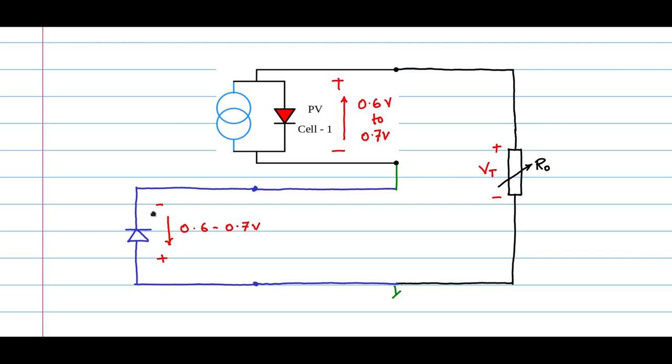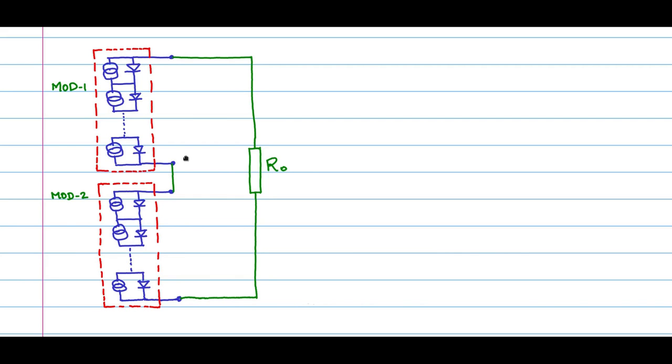Now, if you consider instead of two single PV cells, we put many PV cells in series and we call that one a module. Likewise, here are many PV cells in series, and we are calling that one another module. So you have module 1 and module 2.